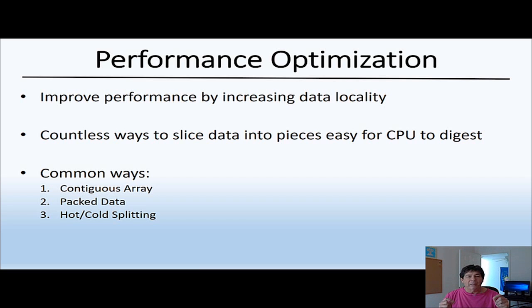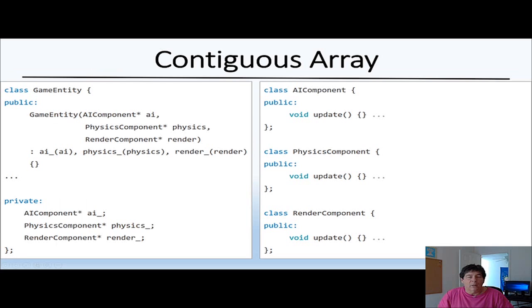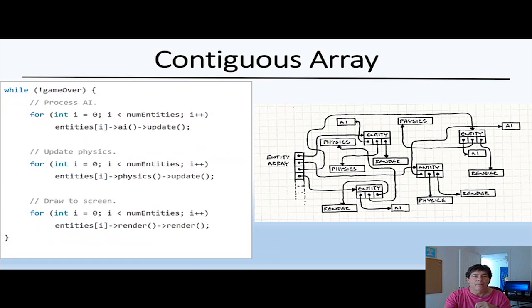Here you see a class called game entity that contains three other classes, actually arrays of classes: AI component, physics component and render component. You can see those three classes over here and you can see the private data which contains pointers to those classes.